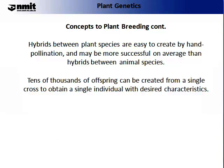The final concept I'd like to introduce here is that hybrids between plant species are easy to create by hand pollination and may be more successful on average than hybrids between animal species. In the introductory lecture on genetics, we looked at the method of hand pollination and you can refer back to those lectures for more details. Tens of thousands of offspring can be created from a single cross to obtain a single individual with desirable characteristics.